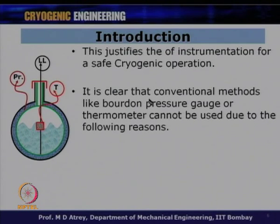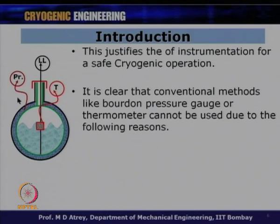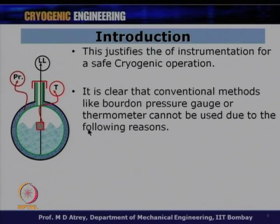Conventional methods like a Bourdon pressure gauge or mercury thermometer cannot be used in cryogenic conditions—a Bourdon gauge cannot measure vacuum (negative pressure), and mercury thermometers cannot work at cryogenic temperatures. Special sensors are needed that will work at very low temperatures and satisfy additional requirements that become more stringent at lower temperatures.